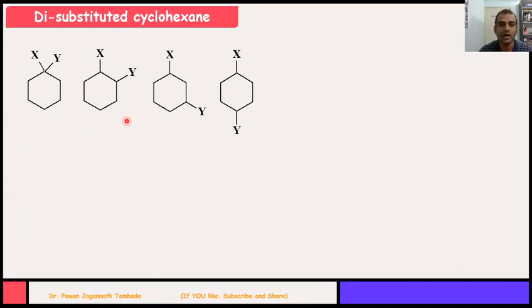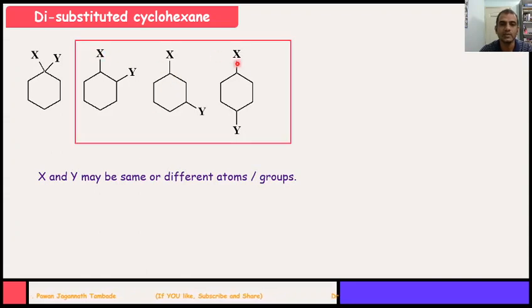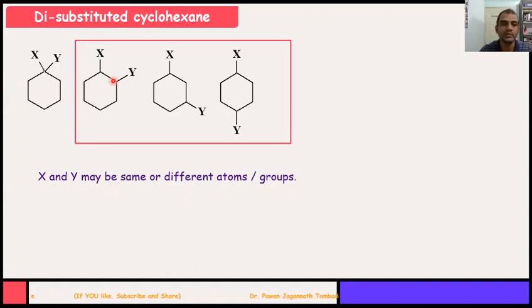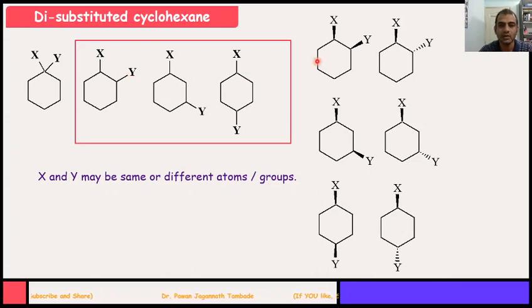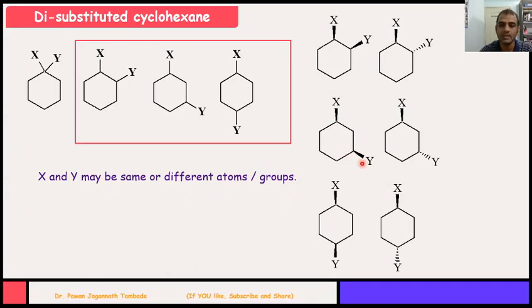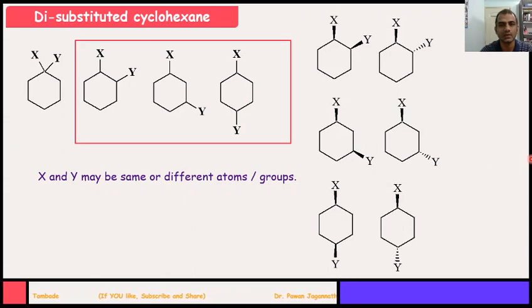Out of these four different possibilities, three can give us geometrical isomers like cis and trans. However, in the 1,1 case, cis and trans isomerism is not possible. So if substituents are present on 1,2, 1,3, and 1,4 carbons, then we can see geometrical isomerism. In 1,2 these X and Y may be either on the same side or on opposite sides, giving cis and trans isomers. Similarly for 1,3 and 1,4.